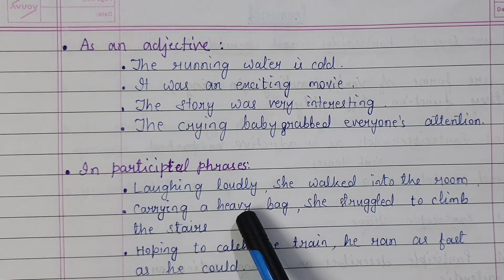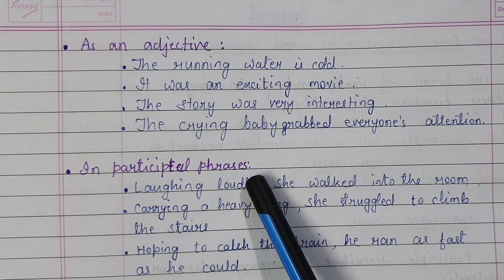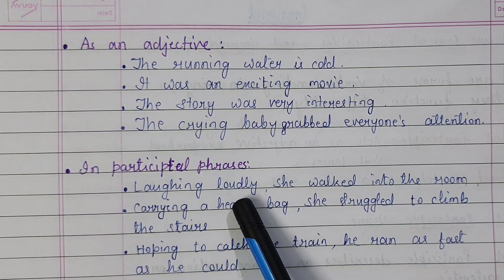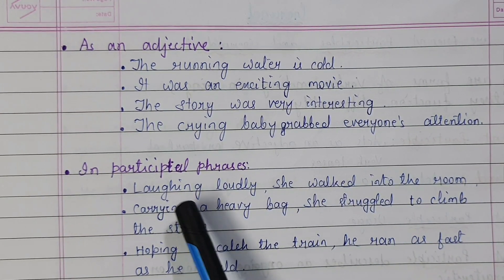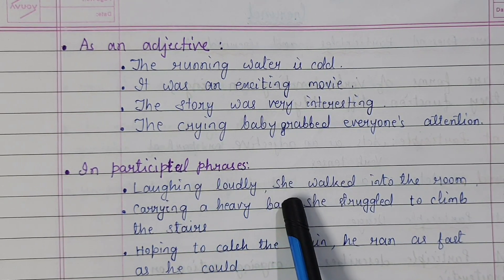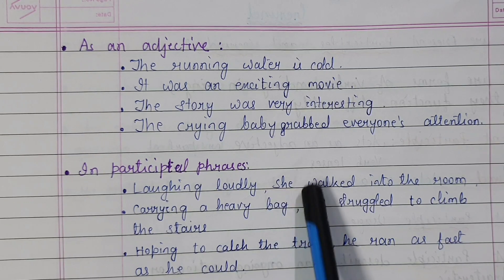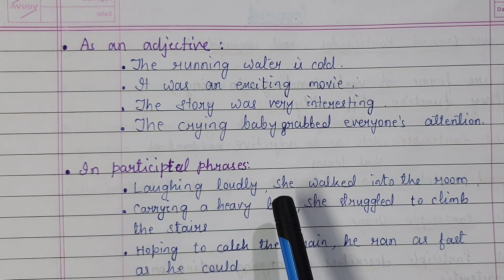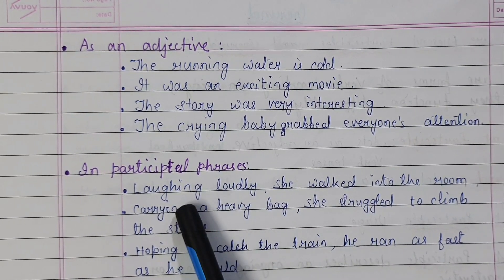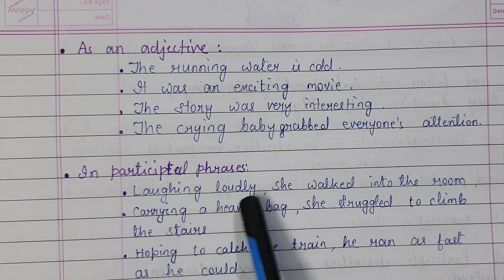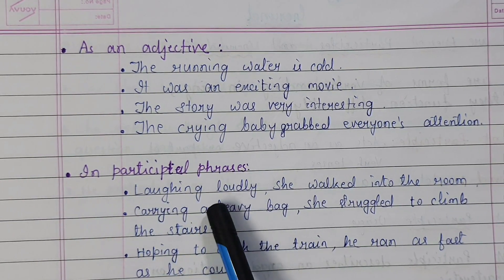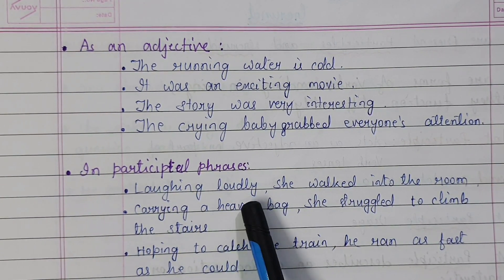Also, we use present participle in participial phrases. 'Laughing loudly, she walked into the room.' Laughing describes she — a pronoun. When a word describes a pronoun or noun, it is an adjective. So laughing is the ing form of a verb acting as an adjective. Laughing loudly is a participial phrase.